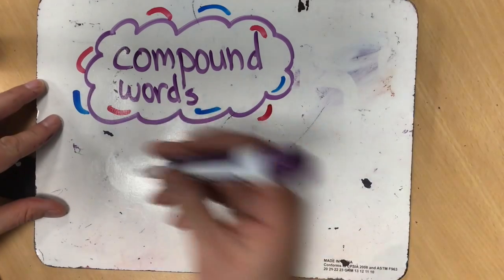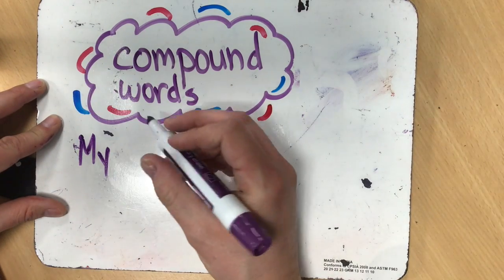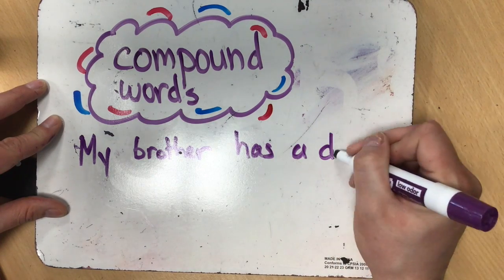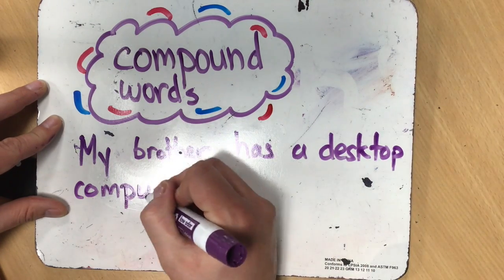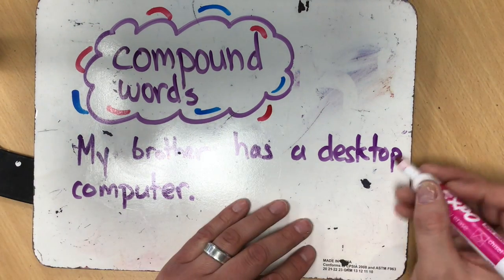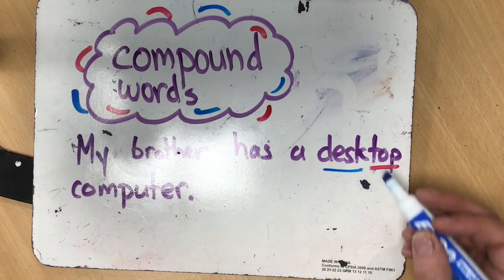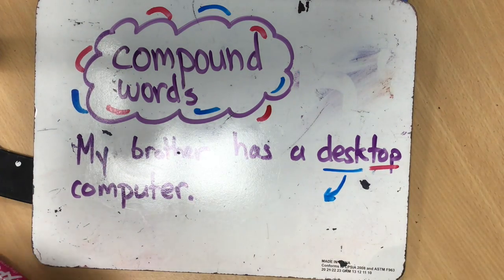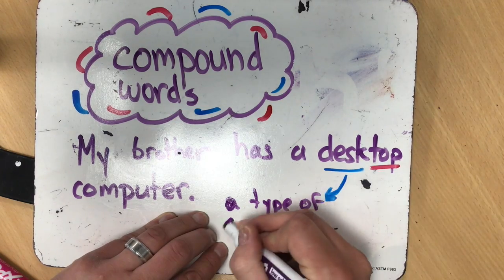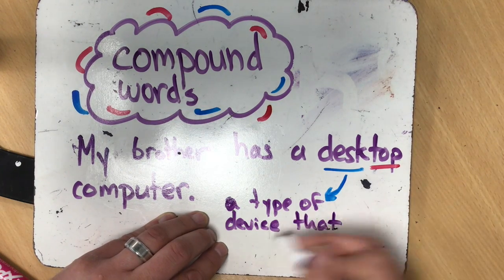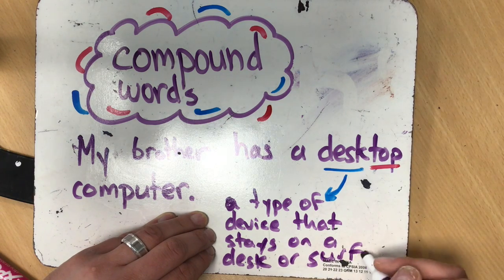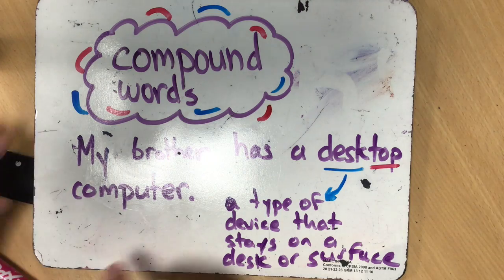Our first one is: my brother has a desktop computer. Desktop is our compound word, made up of two words: desk and top. Originally we might look at this word and think that desktop is the top of the desk — and it kind of is. But what desktop actually means, a more accurate definition, is some sort of device that sits on a desk or a surface, something that stays on a surface.